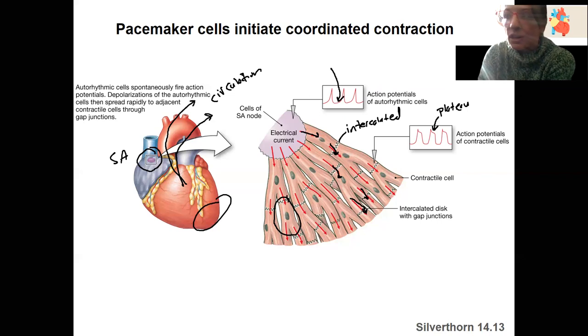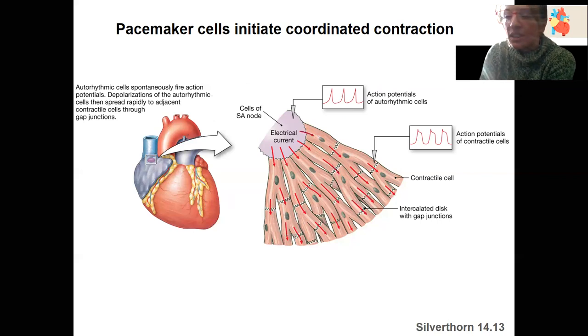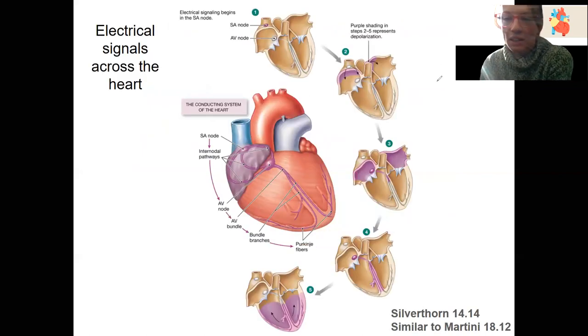The SA node is setting the rhythm, but there is a second node that can set the rhythm if the SA node is damaged. So you'll see that in this image here. This is looking at the same idea but in more detail. So we've got step one, SA node is going to spontaneously fire action potentials. That's right here.